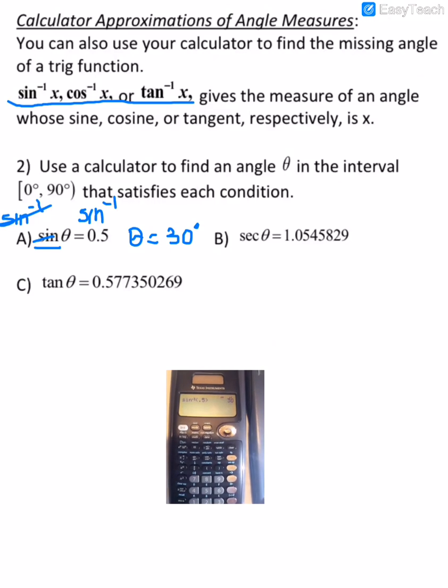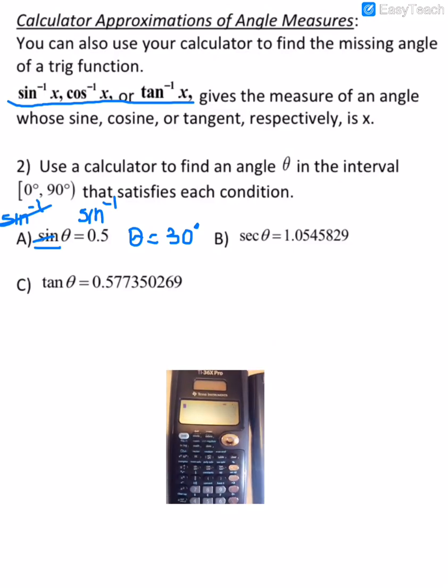Okay, now for secant of theta, we don't have a button for secant, but secant is the reciprocal of cosine. So, the way that we would put this in the calculator, it would be cosine inverse, so press the cosine button twice, and then we take the reciprocal of the value.